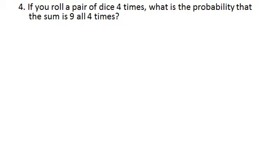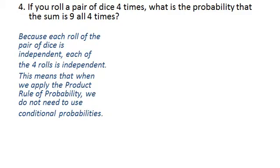We need to keep in mind that because each roll of the pair of dice is independent, in other words it doesn't matter which roll you're on, the probability of rolling a particular sum is not affected by a previous roll. Because of that, when we apply the product rule of probability, we don't need to use conditional probabilities.